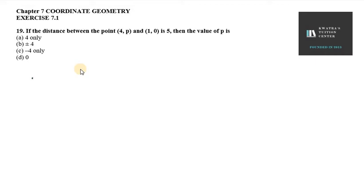So here we have two points here. That is A (4,P) and we have other point as B (1,0). Now the distance between us has given us, that is 5. And the value of P is unknown here.